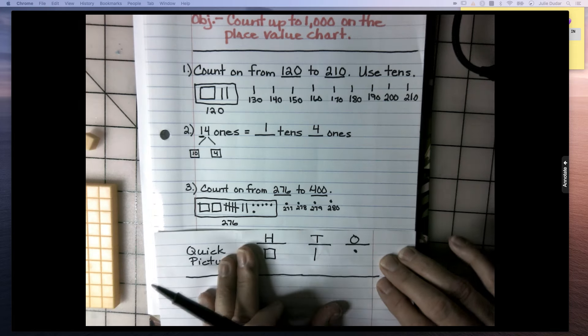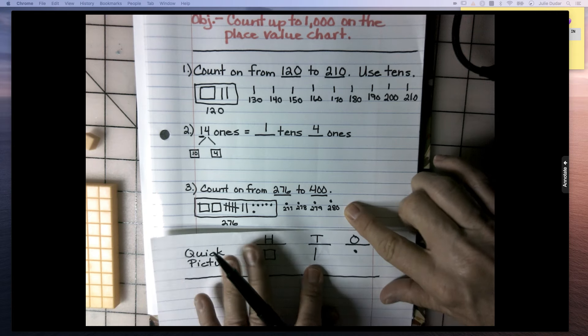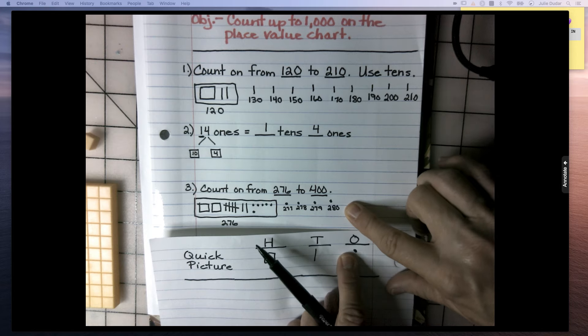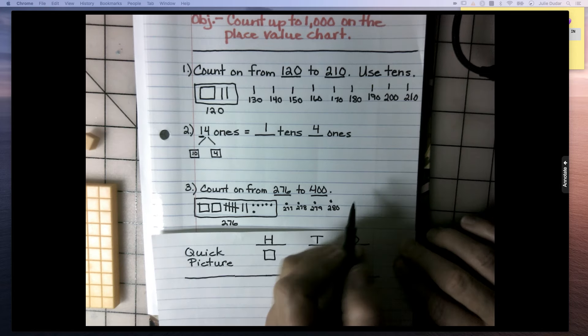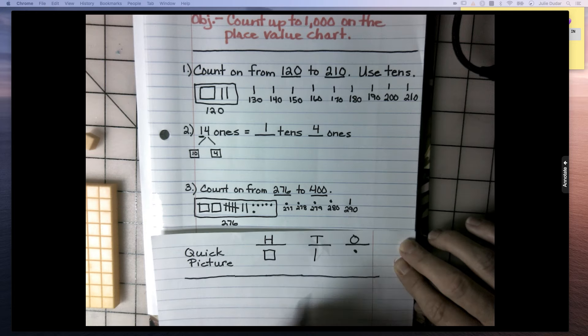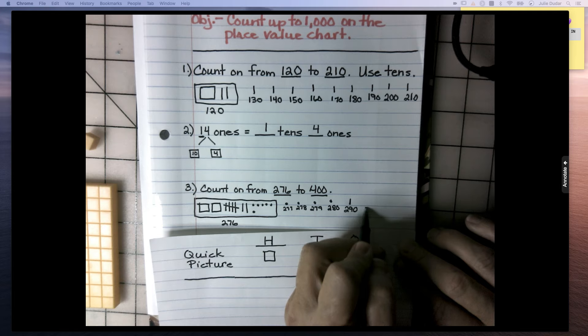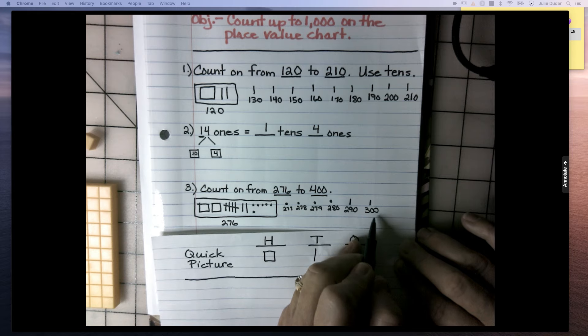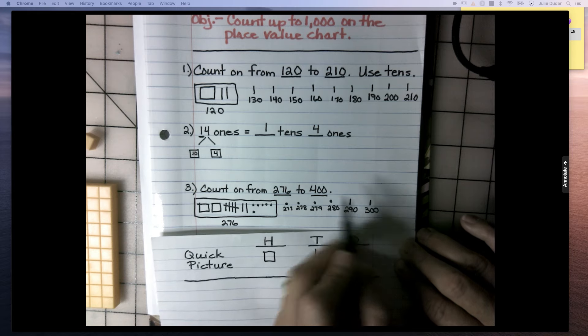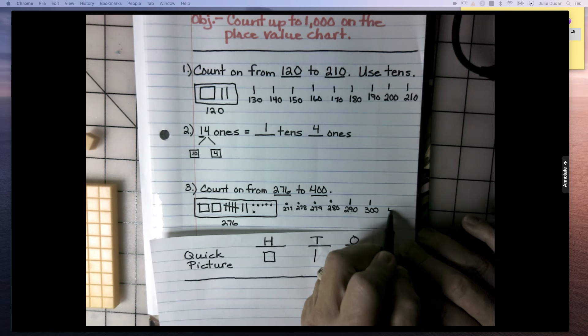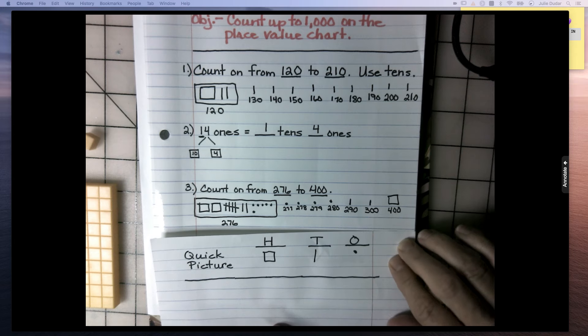Would I use hundreds to get to 300? Would I use tens? Or would I use ones? Think. What comes after 280 that ends in a zero? Hopefully you said a 10 for 290. And then getting to 300, well, that's just one more 10. So I'm at 300. Well, that's a benchmark number. And to go from 300 to 400, that's just one more 100. So to do that, I'm just going to add a square. And I have reached 400.